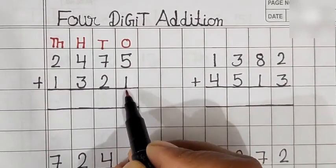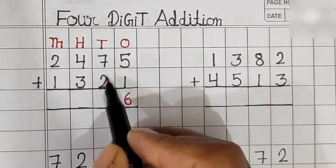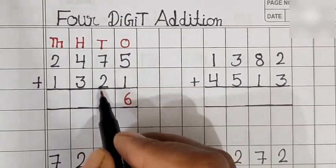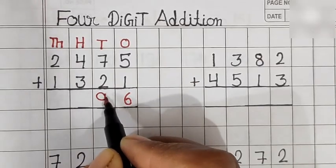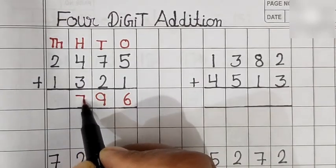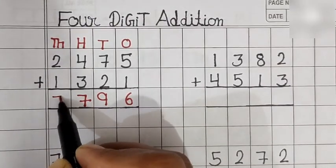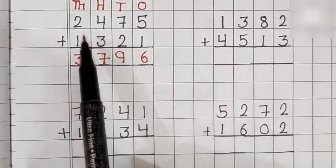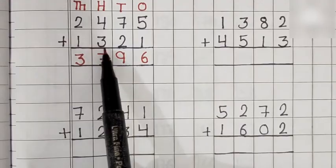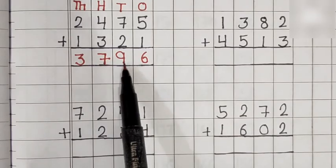5 plus 1 is equal to 6. 7 plus 2 is equal to 9. 4 plus 3 is equal to 7. 2 plus 1 is equal to 3. So, 2,475 plus 1,321 is equal to 3,796.